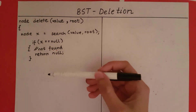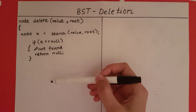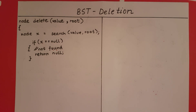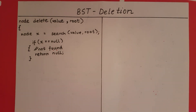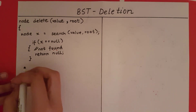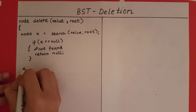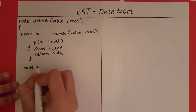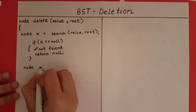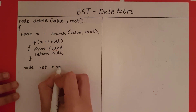Now that we have come to this line of code, we know that our value has been found and the node at which it has been found is x. This is the node we need to return. So let's make a copy of this node in another node — say, node ret is equal to x.